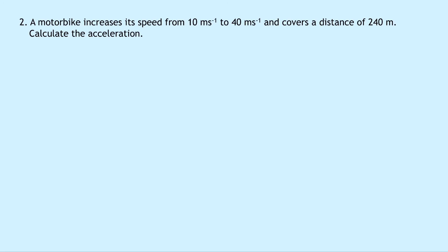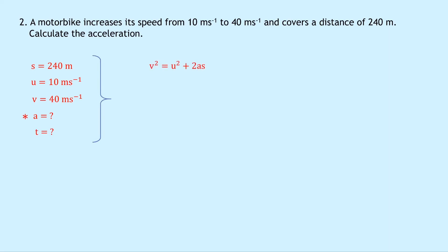Question two says that a motorbike increases its speed from 10 meters per second to 40 meters per second and covers a distance of 240 meters. Calculate the acceleration. Writing down SUVAT on the left hand side: S equals 240 meters, U equals 10 meters per second, V equals 40 meters per second, acceleration is what we're trying to find, and the time is unknown. Putting a star next to A, writing V squared equals U squared plus 2AS, substituting in gives 40 squared equals 10 squared plus 2 times A times 240. Simplifying and swapping the sides, we get 480A equals 1,500 — that 1,500 comes from 40 squared minus 10 squared. Dividing both sides by 480 gives A equals 3.1 meters per second squared.